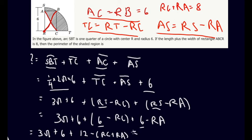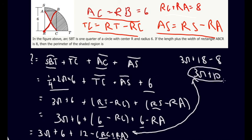So now we can write... I'm actually going to draw an arrow, this thing up here. So this is 3π plus... 6 plus 12 is 18. Minus the RC plus RA, which we know is equal to 8. So this is 3π plus 10. And that's our final answer.